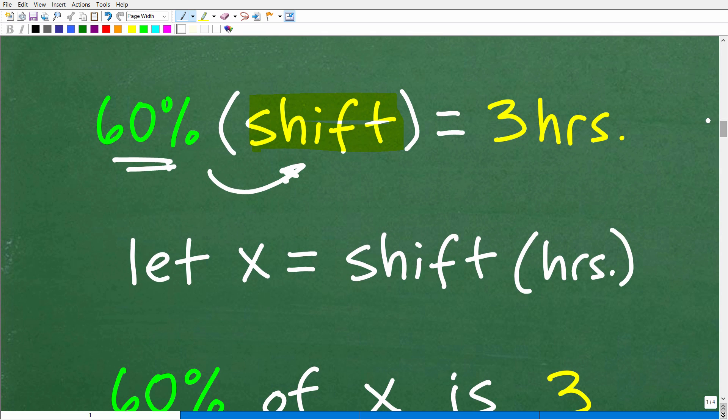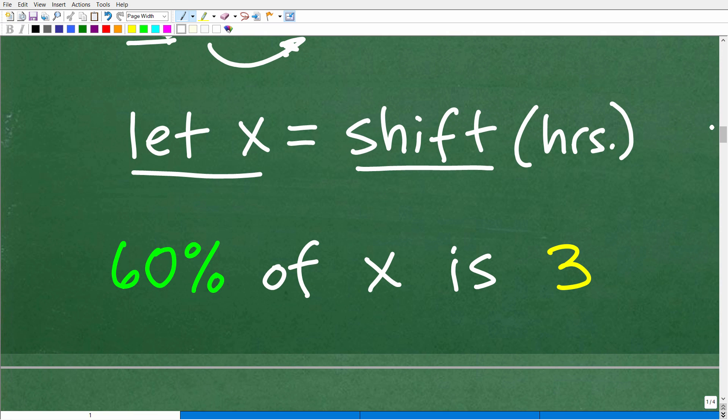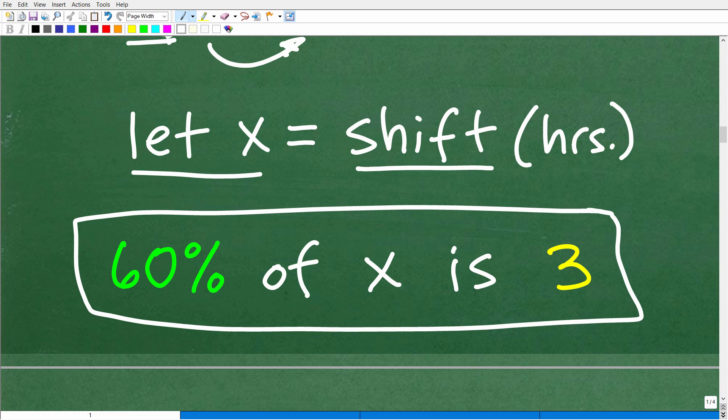So we'll just think of the shift in terms of some time span in hours, but 60% of whatever the entire shift is, is three hours. So how do we solve this problem? Well, let's use algebra. And so instead of the shift here, let's go ahead and use the variable X. So let's let X equal or represent the entire time of the shift in hours. So now our problem really becomes this: 60% of X, and of course X is the entire shift, 60% of the entire shift or X is three. Okay. So now we just kind of translated this problem into this percent problem.